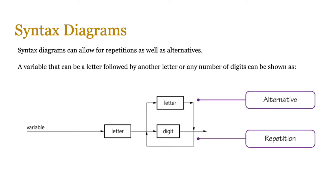You could also show repetition as well as alternatives in a syntax diagram. For example, a variable can be a letter followed by another letter or any number of digits. The alternatives are rectangular boxes which pile upwards or downwards, and the arrows denote repetition. In this case, the first character has to be a letter, then it can be any number of letters or any number of digits. So A1 is a valid variable name, A123 is a valid variable name, and AAA is a valid variable name. Any particular combination is possible, and you can denote that by creating a stack of different types and arrows to denote a loop.